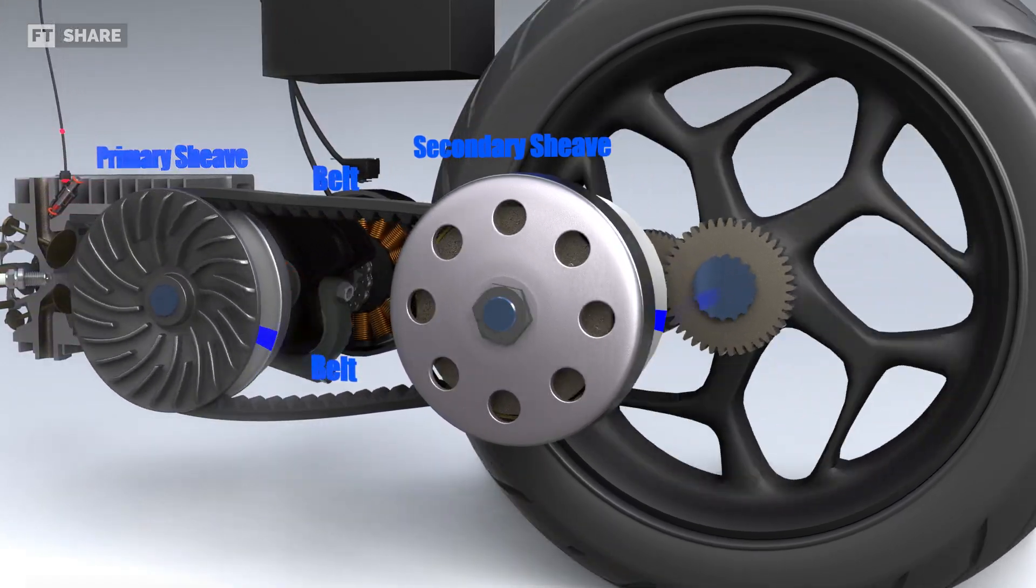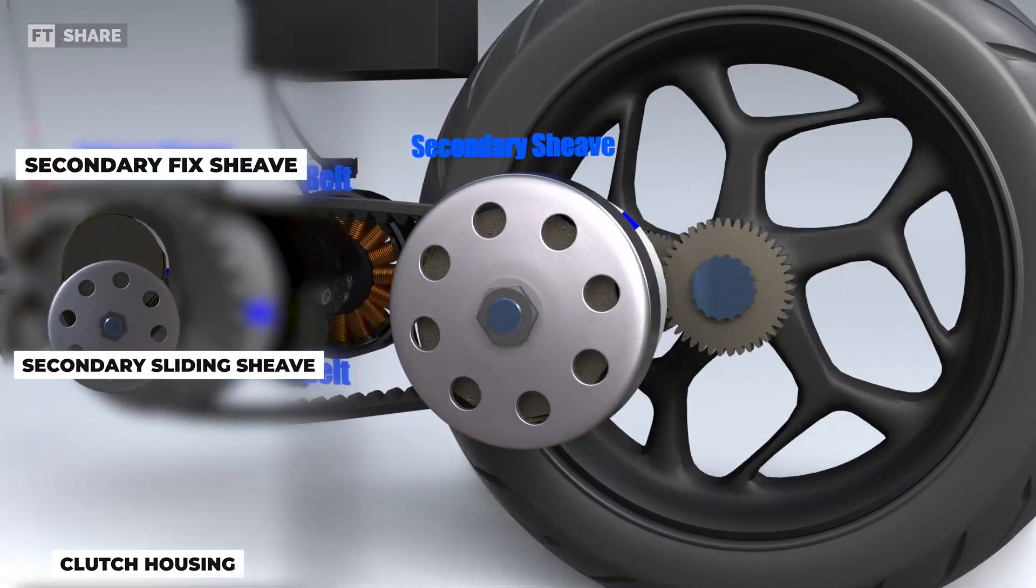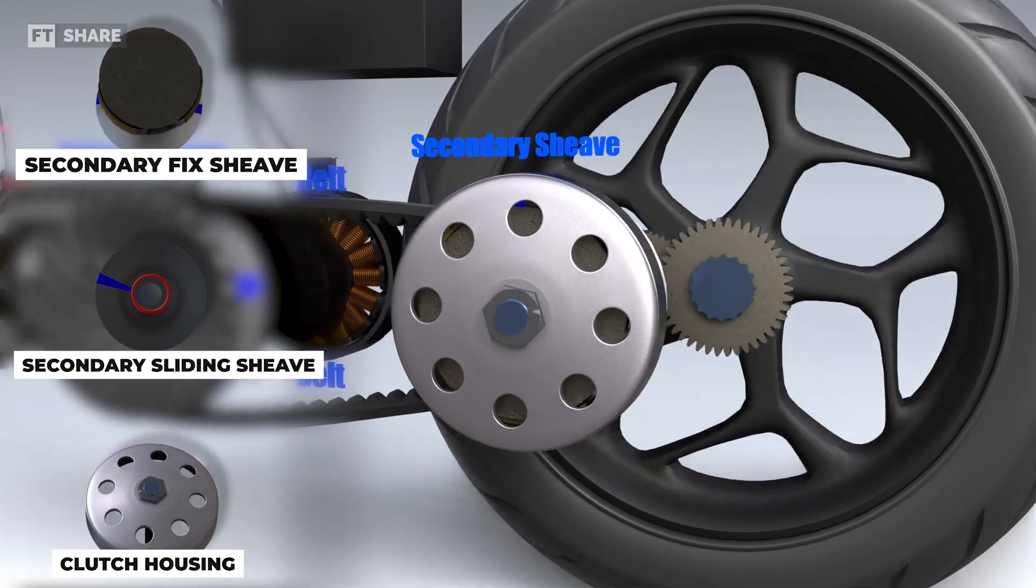Moving to the back, we'll also find two tapered plates, the secondary fixed sheave and the secondary sliding sheave.